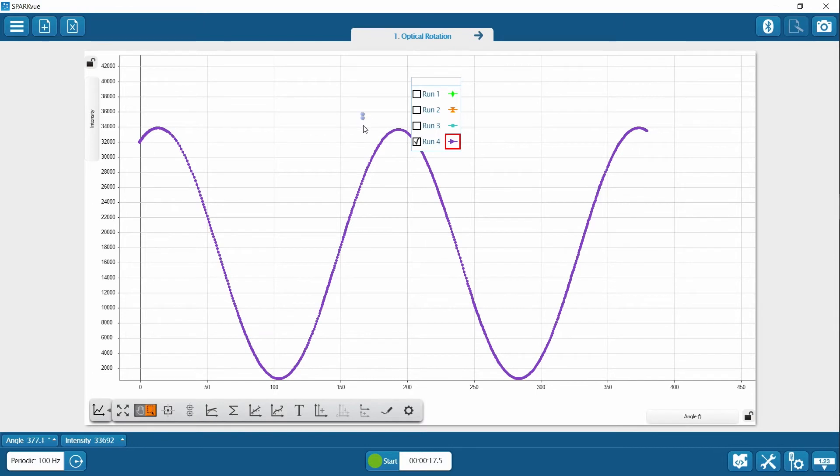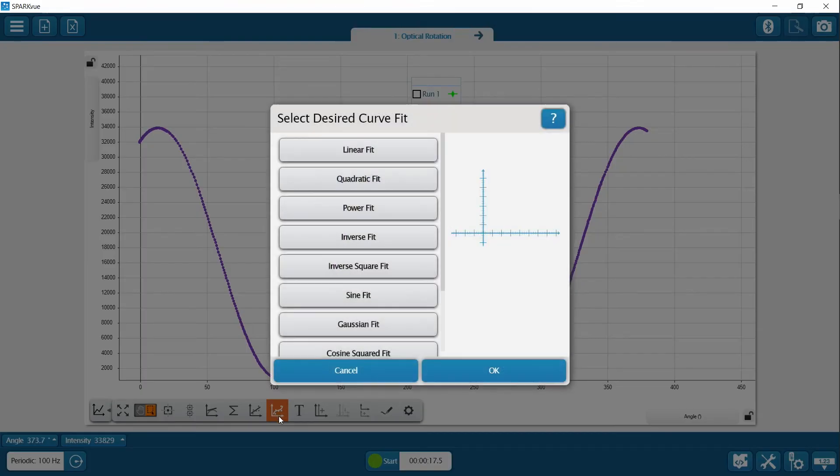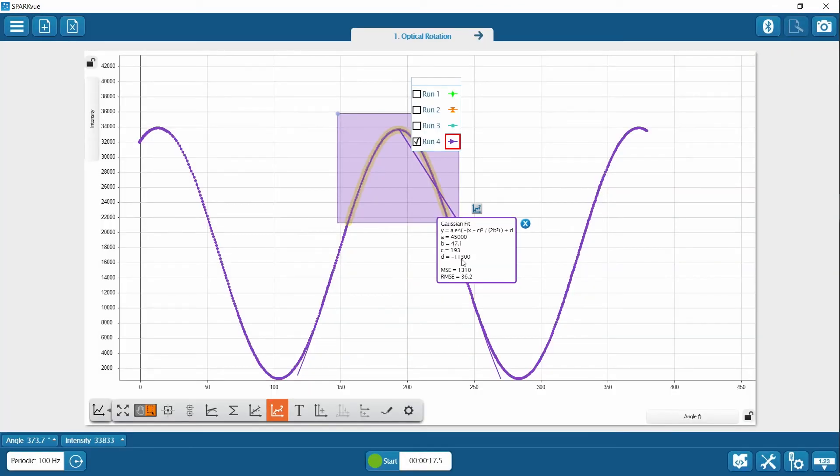We'll choose our selection tool, and we'll come down here and grab a nice symmetric amount of the curve. If you can't reach the top one, you can go to the bottom one, the tool in the toolbar. Choose your Gaussian fit, and we'll get a nice reading of 193.